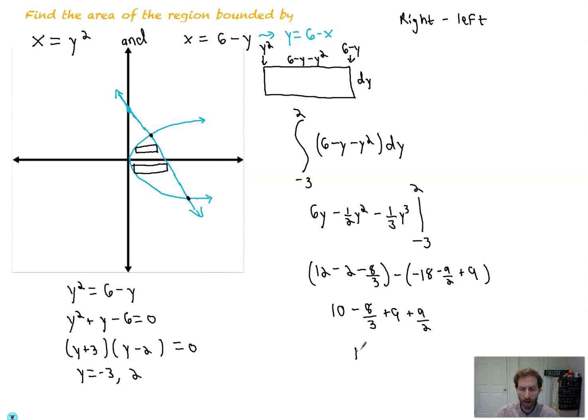All right. We join up everything. We'll get 19. Minus 8 thirds and 9 halves is going to be minus 16 over 6. That's this. Plus 27 over 6.